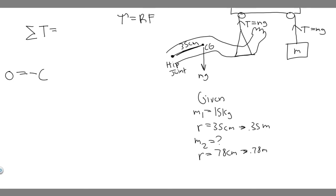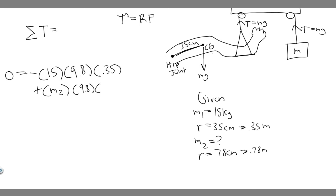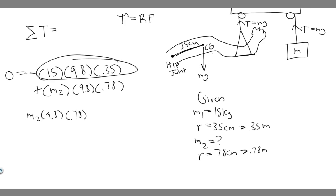Starting with the negative term because it's clockwise: minus 15 times 9.8 times 0.35. Then the counterclockwise torque is positive, so we add m2 times 9.8 times 0.78. Setting the sum equal to zero, we move the first term to the other side so that m2 times 9.8 times 0.78 equals 15 times 9.8 times 0.35.